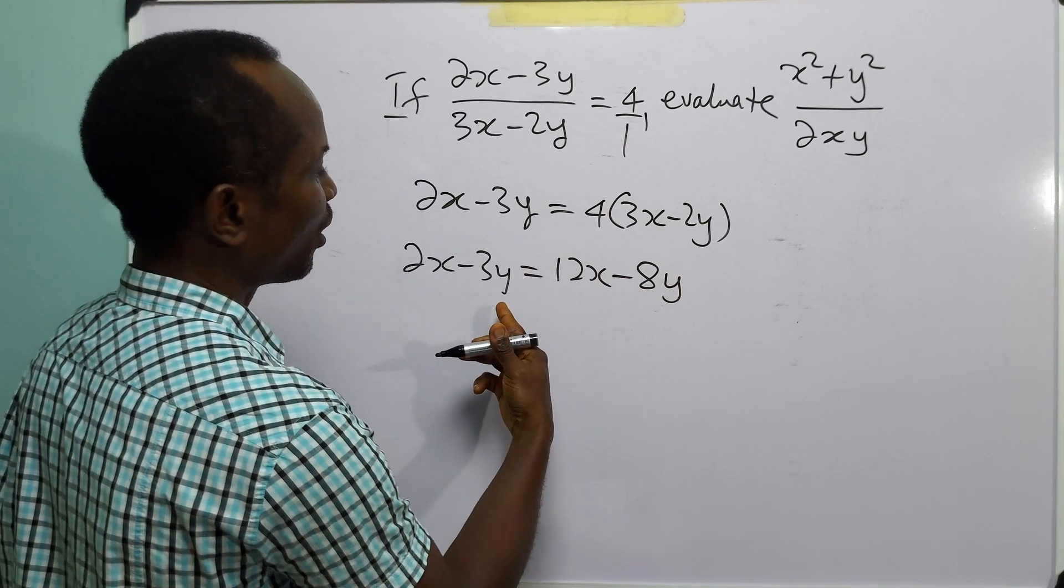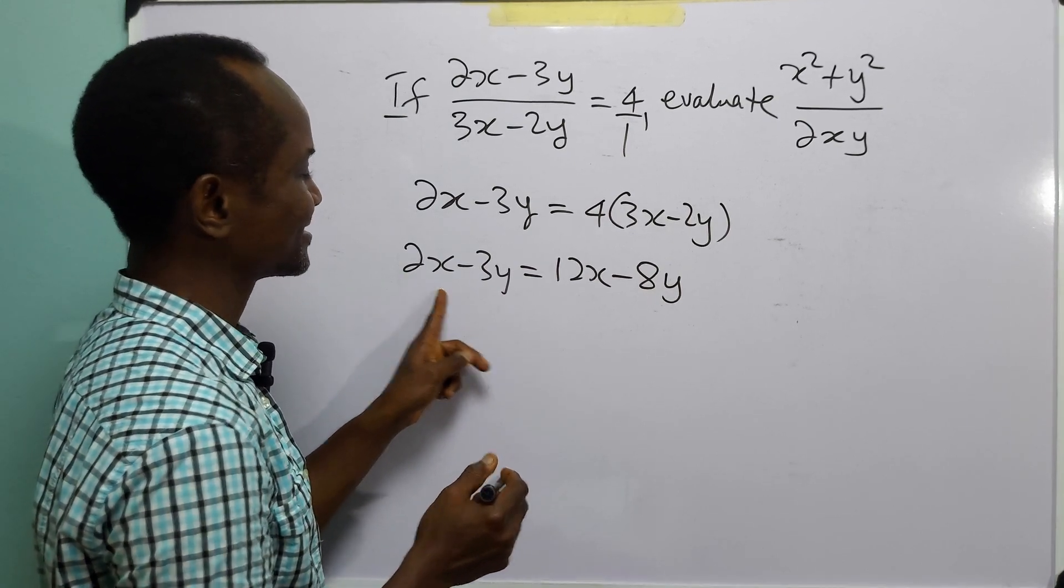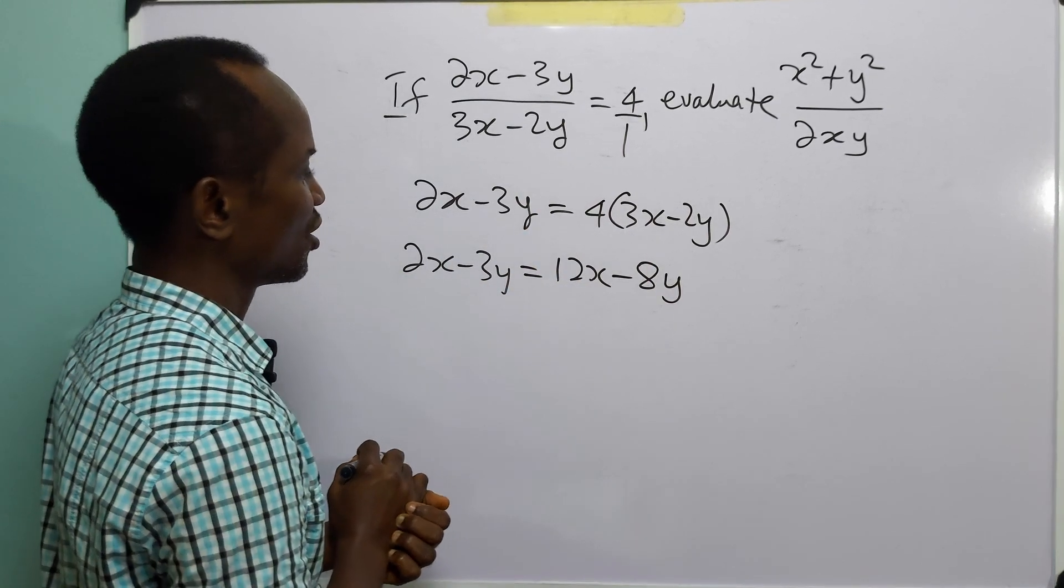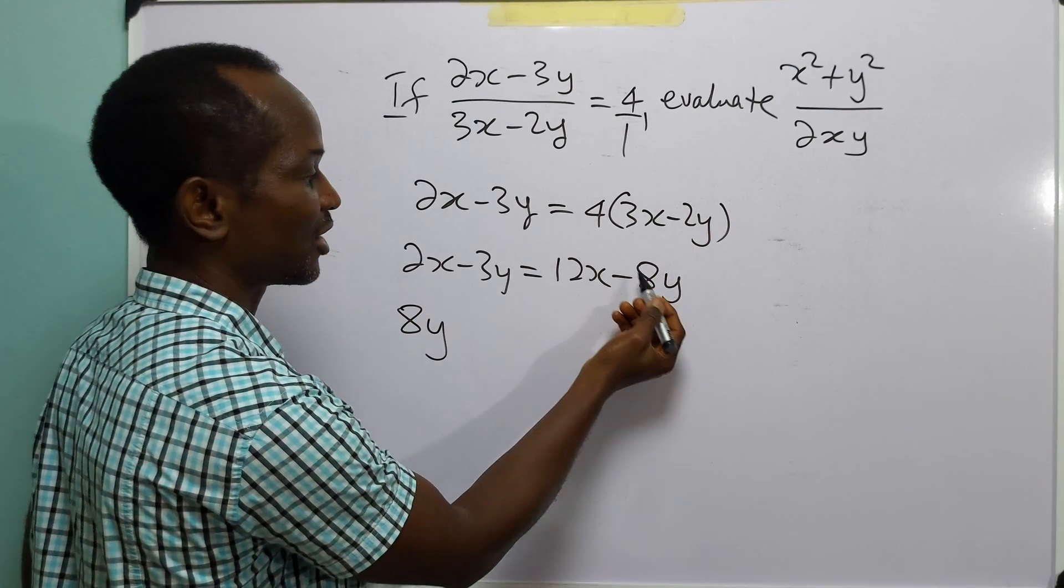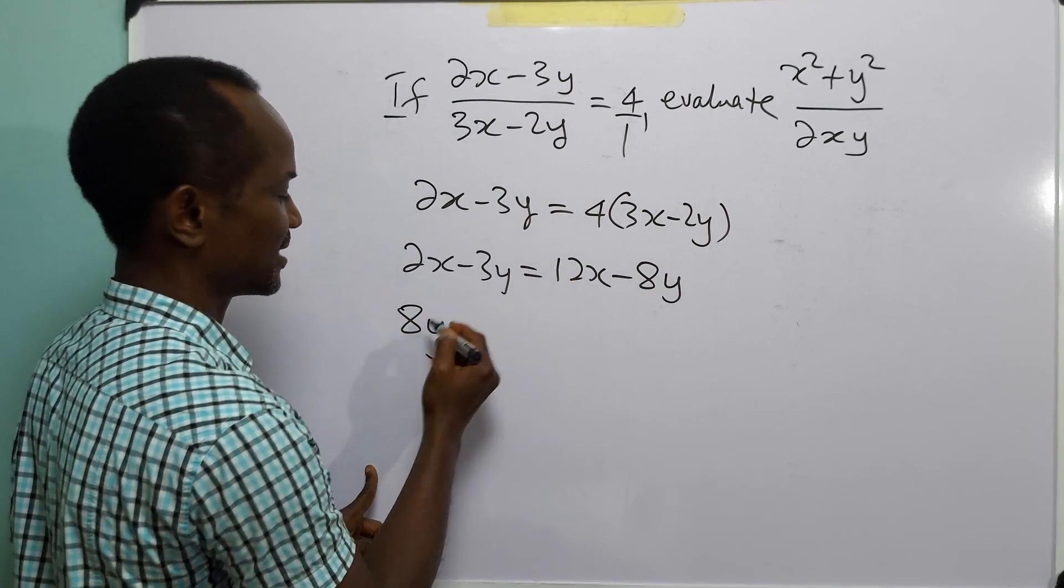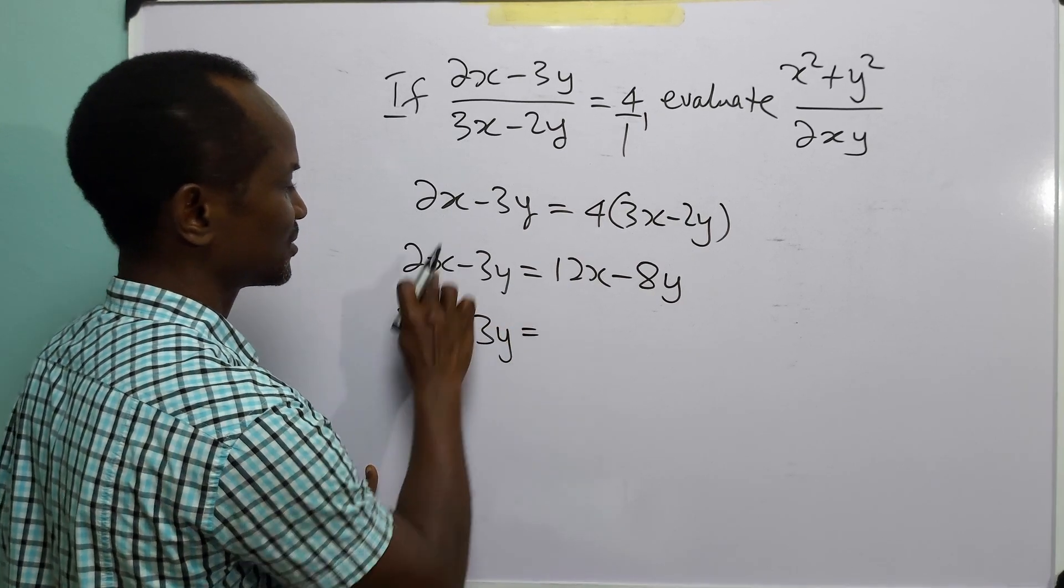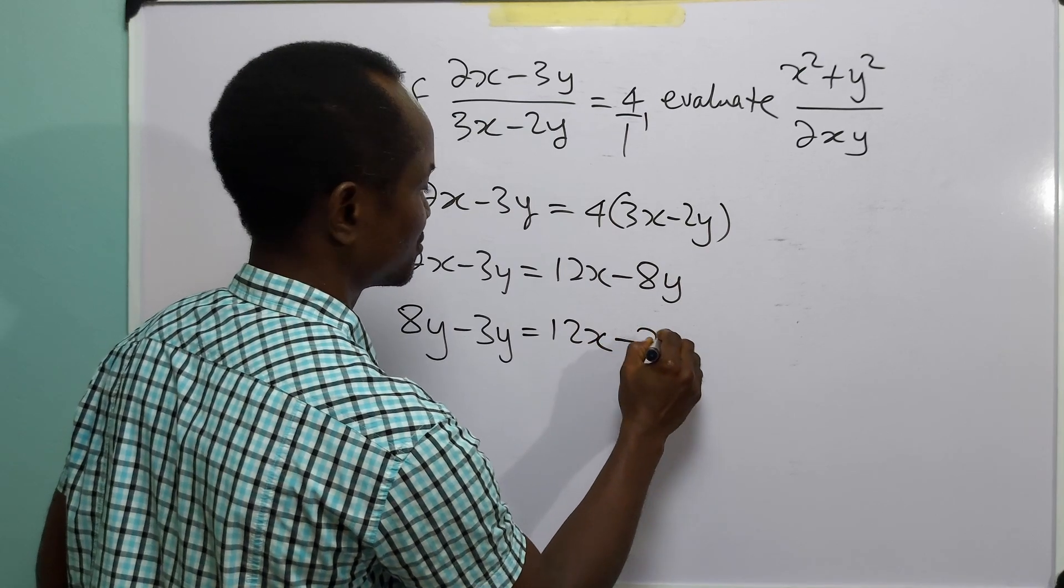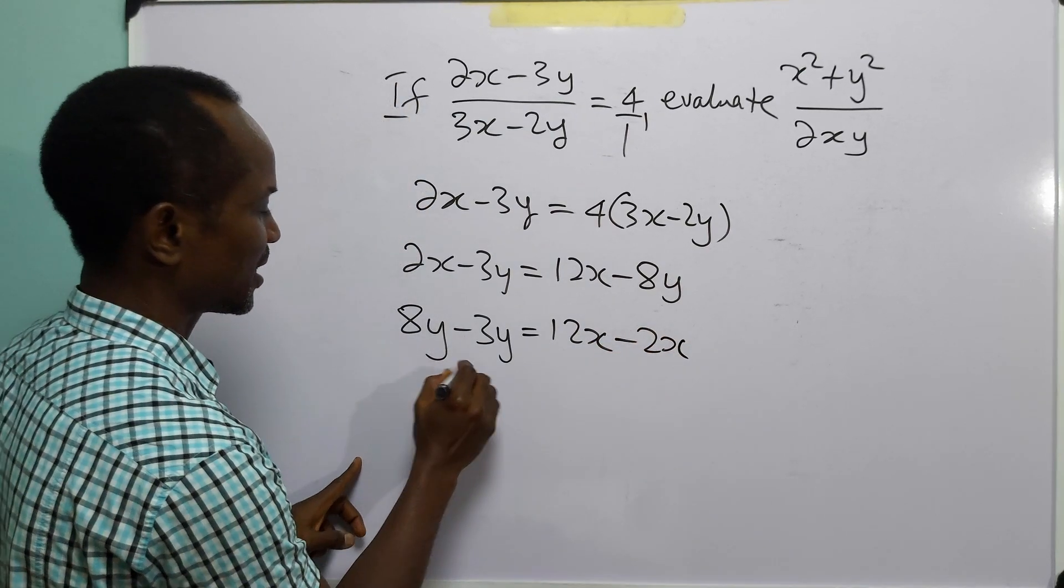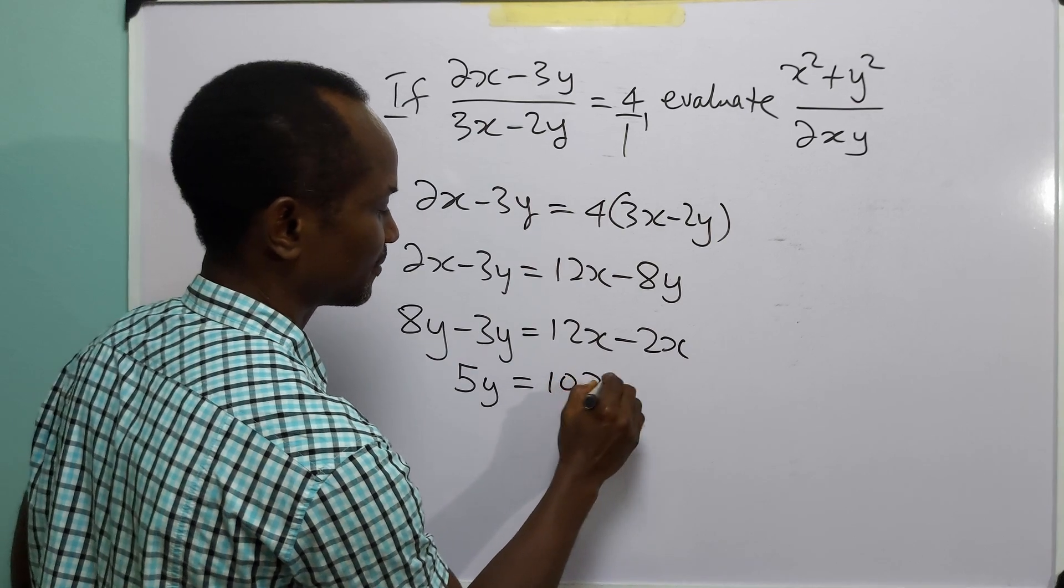Bringing all the y terms to the left-hand side and taking all the x terms to the right-hand side, we have that 8y, because this is negative here, going over the equality sign it becomes positive, minus 3y is equal to 12x minus 2x. And we have that 5y is equal to 10x.